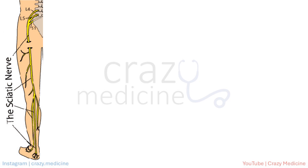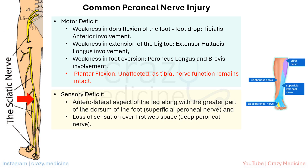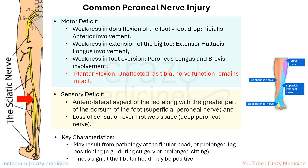Next, let's look at the lesion involving the common peroneal nerve. Motor deficit includes weakness in dorsiflexion — that is, foot drop — due to tibialis anterior involvement, weakness in toe extension due to EHL weakness, and weakness in foot eversion due to peroneal involvement. Plantar flexion remains unaffected, as tibial nerve function is intact. Sensory deficits affect areas innervated by both superficial and deep peroneal nerves. This injury may result from trauma at the fibular head or prolonged leg positioning during surgery. A positive Tinel's sign at the fibular head may be present.